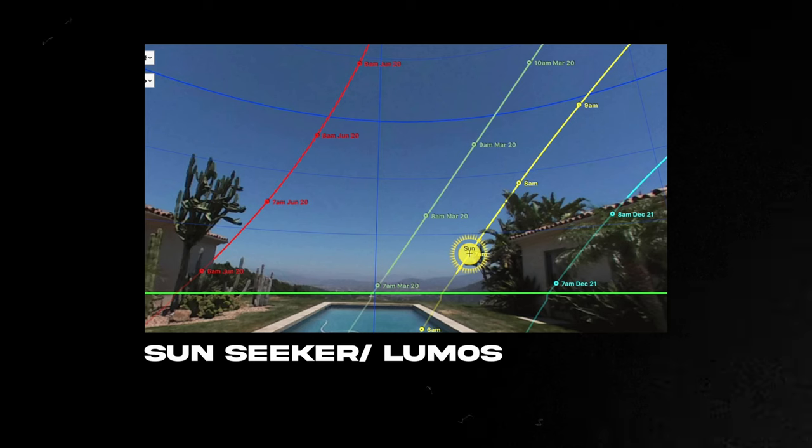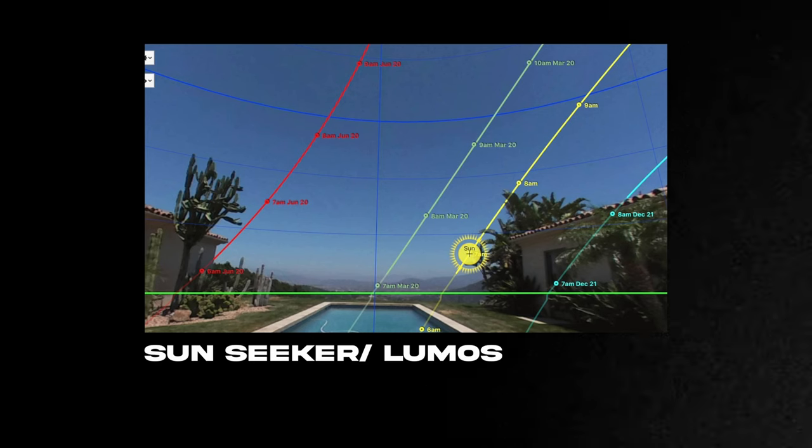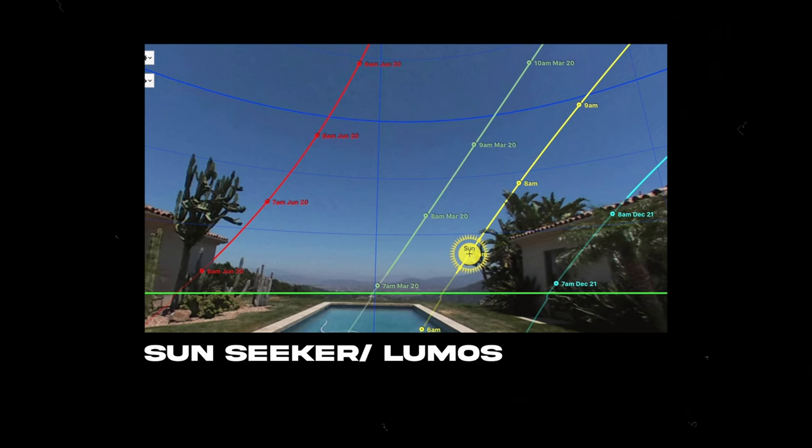Starting with sun position — Sun Seeker or Lumus is a good app to understand where the sun will be. The crucial thing is: if you're doing a location scout one or two months before the actual shooting day, put in the right date, because the sun's position will change significantly over that time.